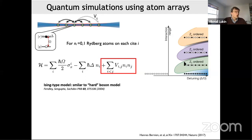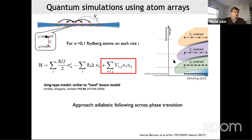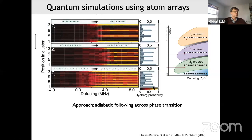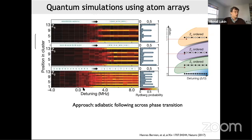To explore this phase diagram, we start with all atoms in the ground state and slowly change the laser detuning to adiabatically enter these phases. Doing this, we see how the different ordered states emerge. By adjusting trap spacing — bringing atoms closer and closer — we can change the blockade range. With nearest-neighbor blockade we get the up-down-up-down antiferromagnetic ordering, and as we scan the detuning near zero we observe large fluctuations as the system cannot decide which state to choose — a signature of the quantum phase transition.